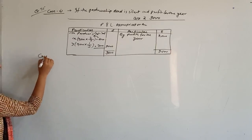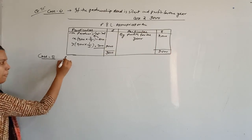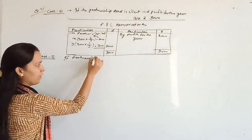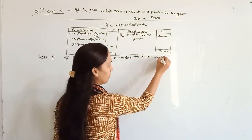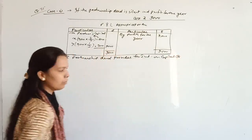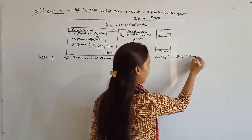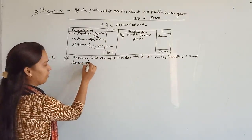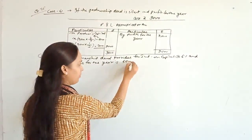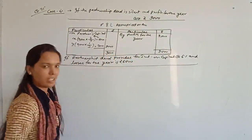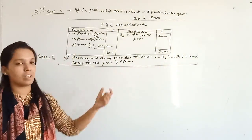Case 2: If the partnership deed provides for interest on capital at the rate of 6%, but losses for the year are 6,000 rupees. Since the firm is suffering a loss, in the condition of loss we do not provide interest on capital. We don't prepare a P&L appropriation account either — we only prepare the P&L account.